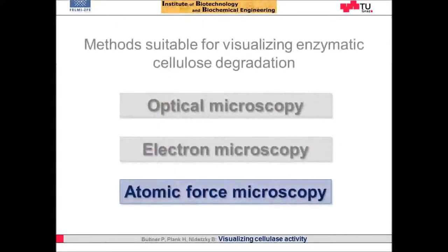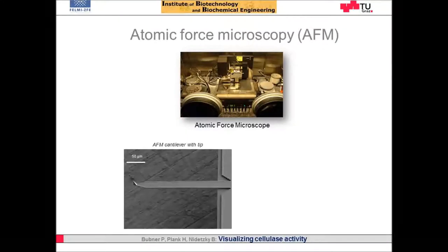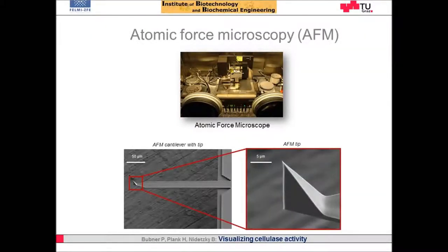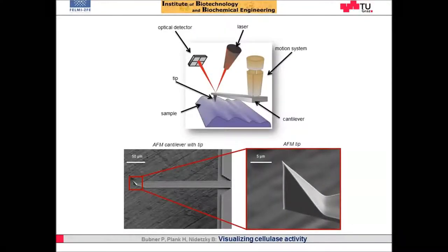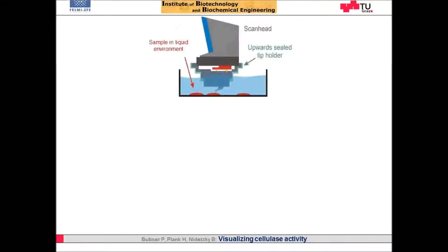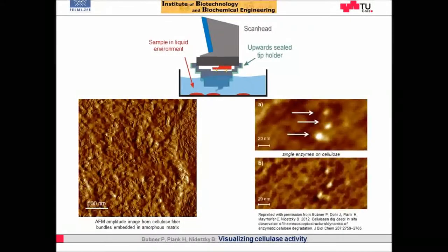In AFM, a sharp tip which is mounted at the end of a flexible cantilever is rastered over the sample surface, thus allowing access to surface structural dynamics. In a so-called liquid cell, samples can be imaged in environmental conditions at ambient temperature and pressure in liquid. In the last decade, several AFM studies gave impressive insight into the behavior of cellulases and the structural dynamics of enzymatic cellulose degradation.